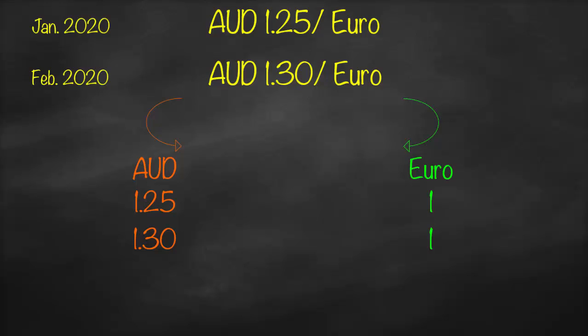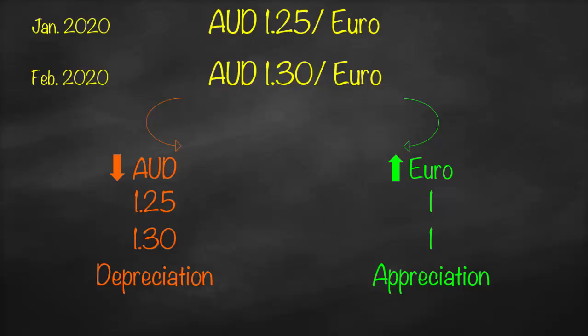I need to pay 1.25 Australian dollars to get one euro; after one month I need to pay 1.3 Australian dollars to get the same one euro. So I need to pay more units of Australian dollar to get the same one unit of euro. This means the value of the Australian dollar will be lower. Consequently, for the same one euro we get more units of the other currency, so the value of the euro will go up — which is called appreciation — and the value of Australian dollar will be lower — which we call depreciation.